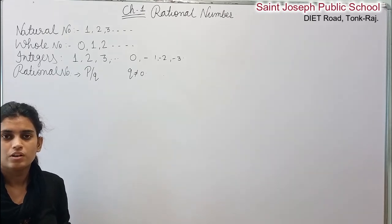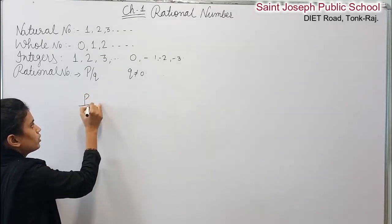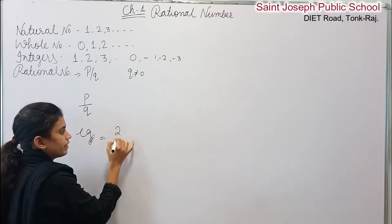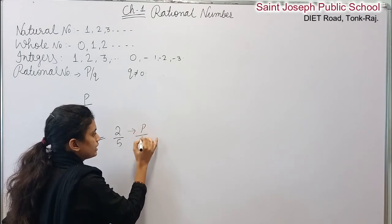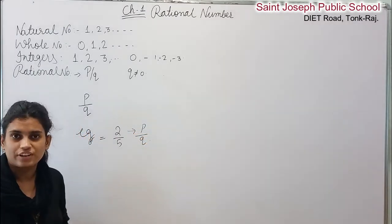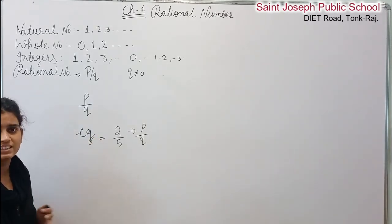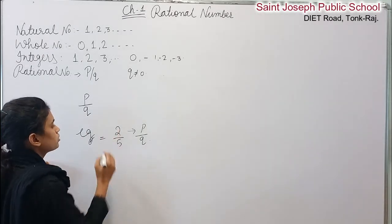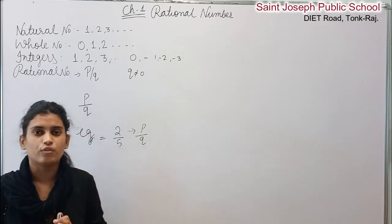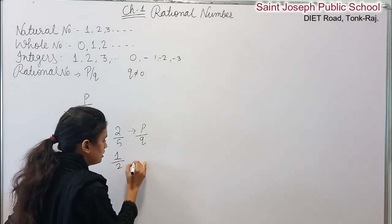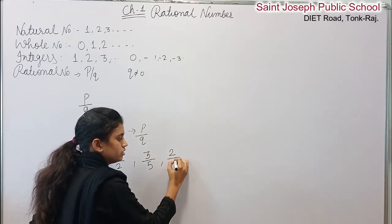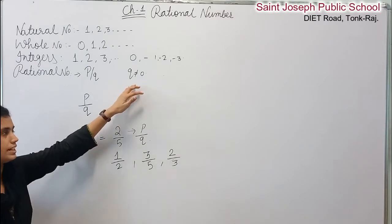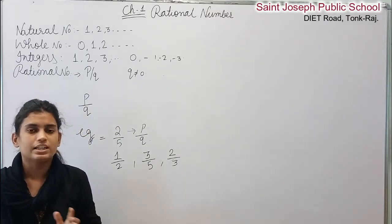If any number is in the form of P by Q — it means P upon Q — it is called a rational number. Let's take an example: 2 by 5. Here 2 is P and 5 is Q. The condition for a rational number is that the denominator Q should never be 0.